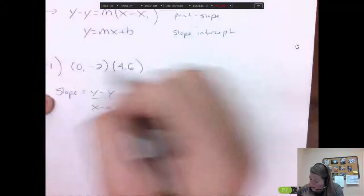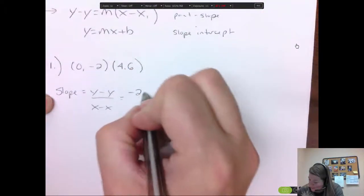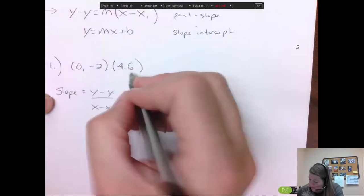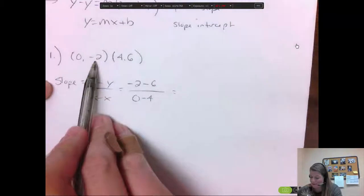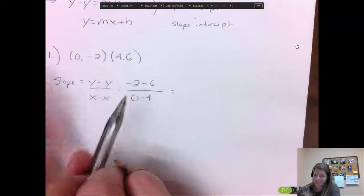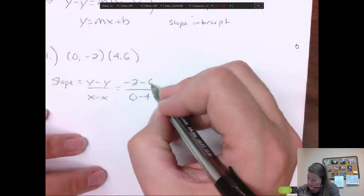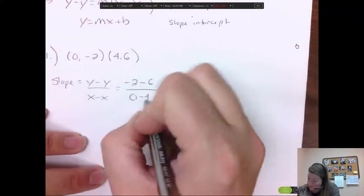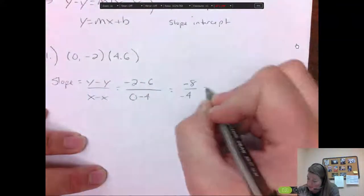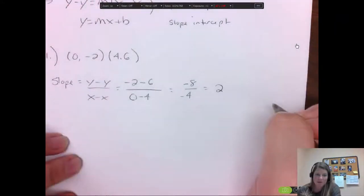So we're going to go y minus y, so -2 minus 6 over x minus x, 0 minus 4. And I could have gone 6 minus -2, 4 minus 0, and I would have got the same answer. So -2 minus 6 is -8. 0 minus 4 is -4. Those will reduce to a 2. So the slope is 2.